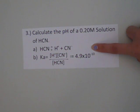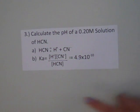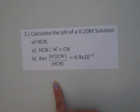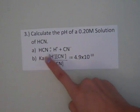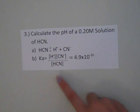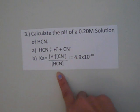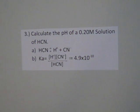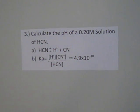Using that reaction, we could write the equilibrium constant equation, which is Ka equals the products — hydrogen and cyanide — over the reactants, HCN. Using our reference tables, we find that the Ka of HCN equals 4.9 times 10 to the negative 10th.